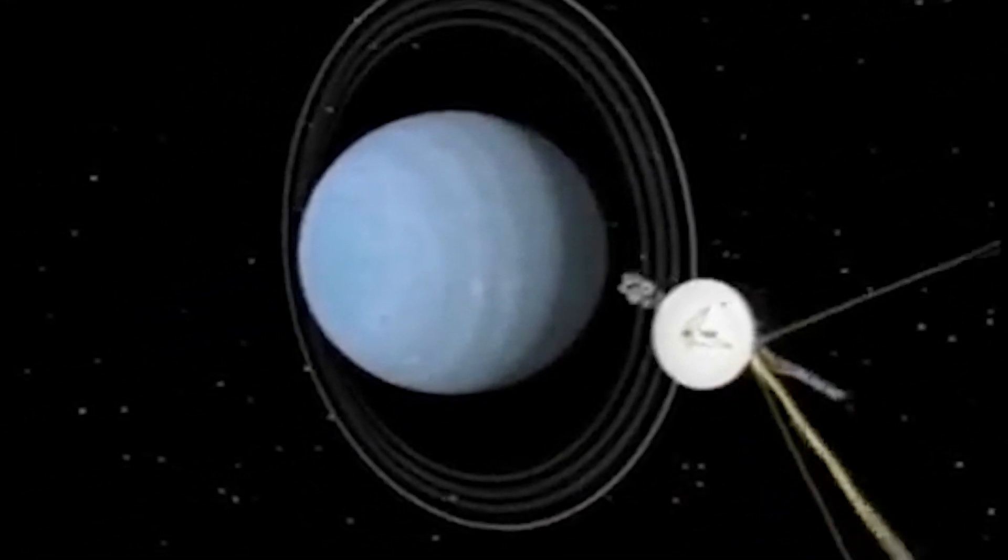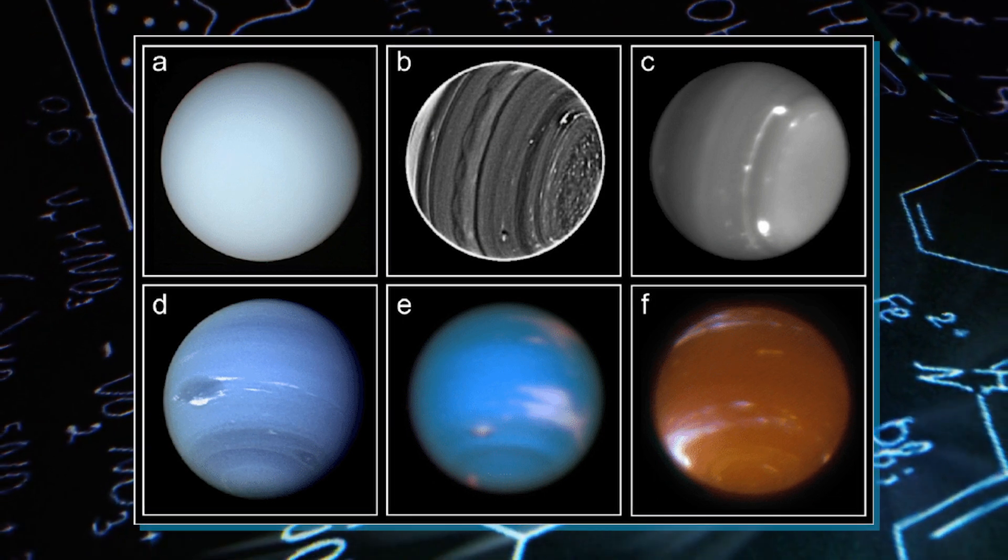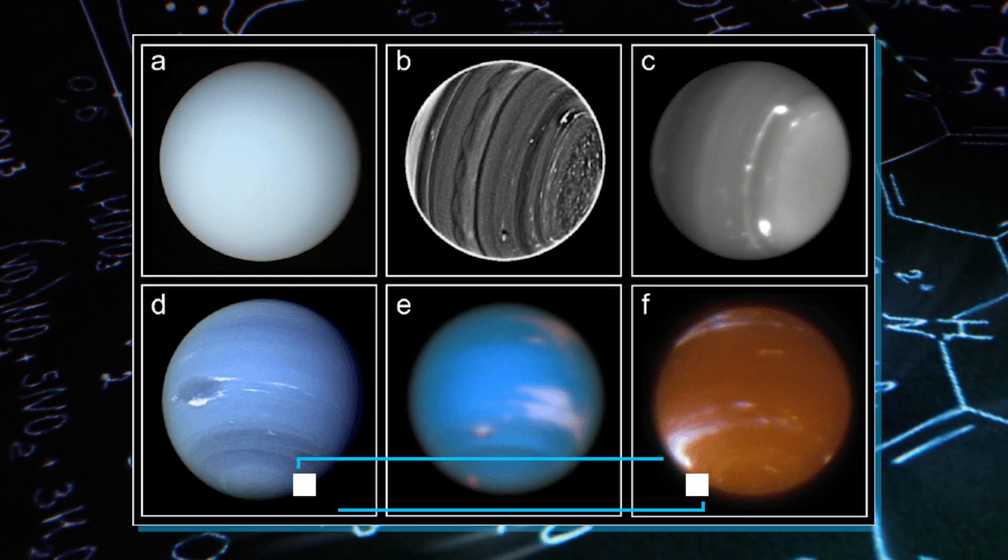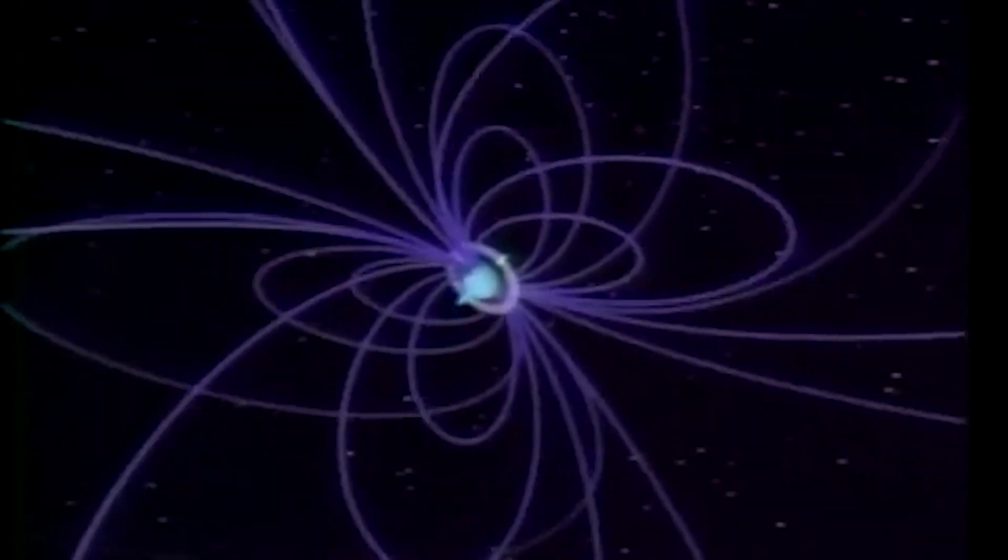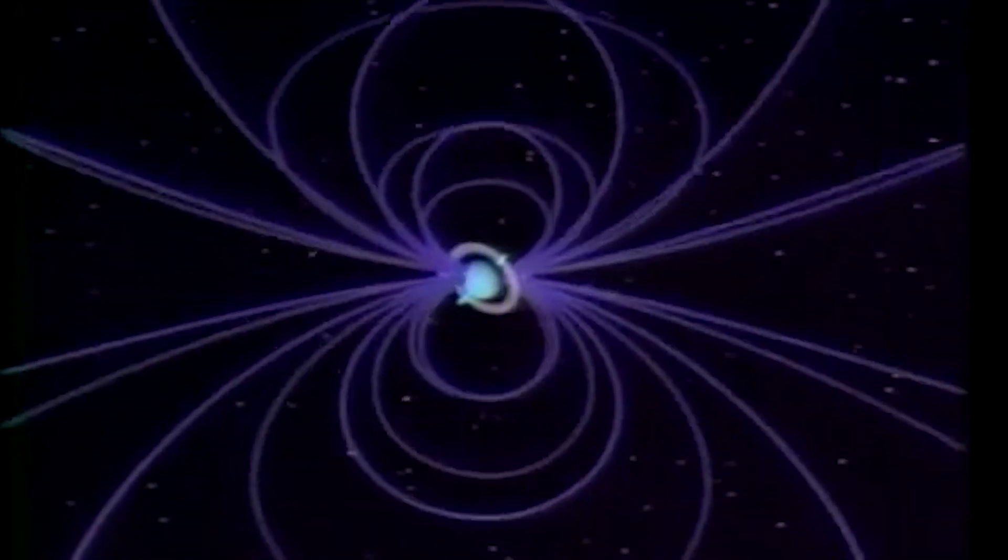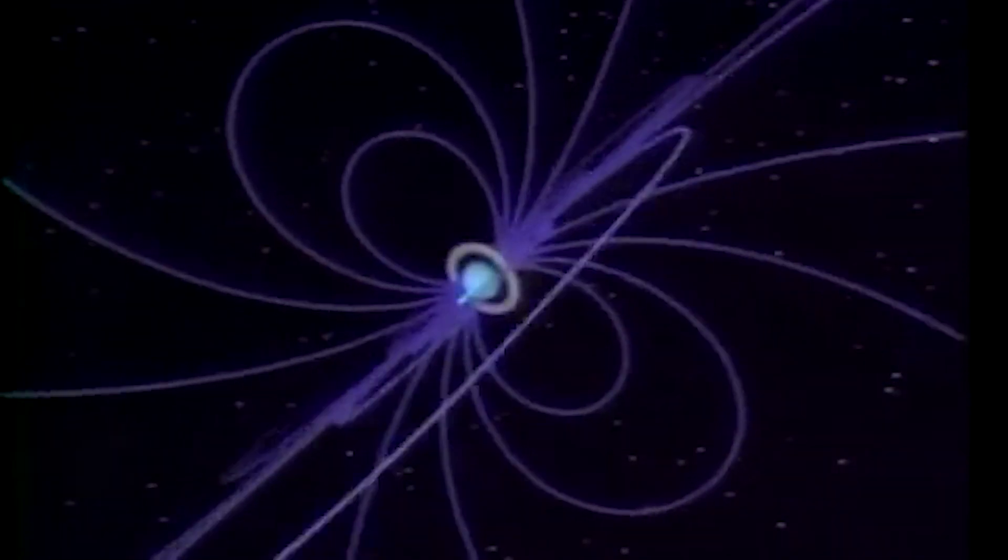In January of 1986, Voyager 2 embarked on a journey toward the ice giant Uranus, marking its sole close encounter with this distant planet. The spacecraft acquired detailed images of Uranus's atmosphere and its five major moons, while also revealing a unique orientation of Uranus's tilted magnetic field.